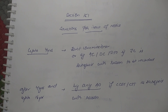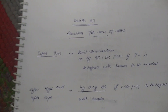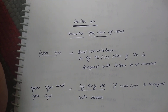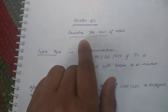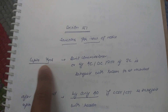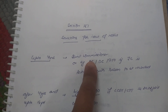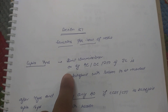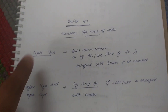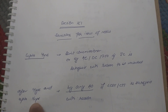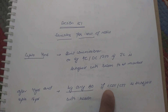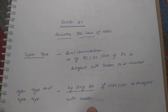Now let's talk about Section 151, which deals with sanction for the issue of notice. To issue a notice under Section 149, certain sanctions are required. If notice is issued up to 4 years, the sanction of the Joint Commissioner is needed — or ACDC — if the JC is satisfied with the reasons recorded. If notice is after 4 years and up to 16 years, then any AO can issue notice if the CCIT or CIT is satisfied with the reasons recorded.